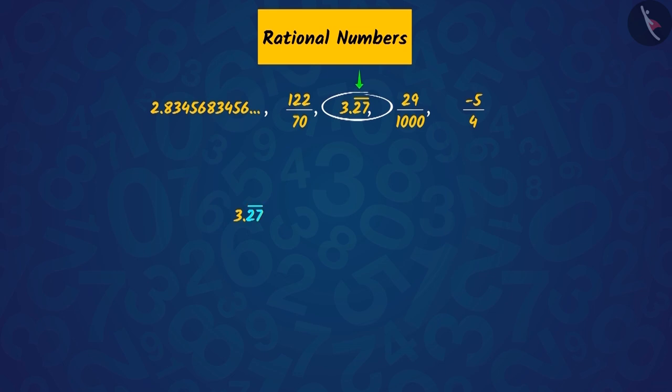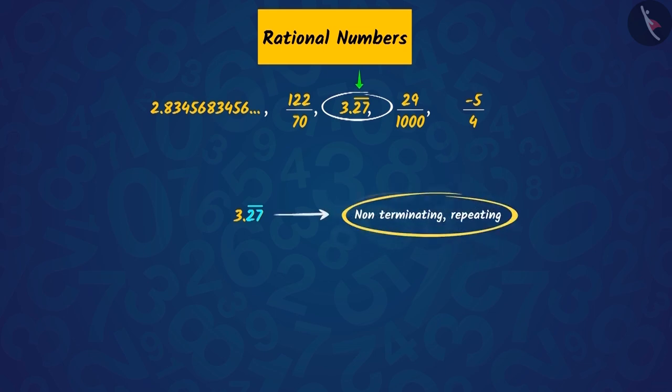So, the decimal expansion of this rational number will be non-terminating, repeating. We can say that if a number has a digit or a group of digits with this bar above them, the decimal expansion of that number is non-terminating, repeating.